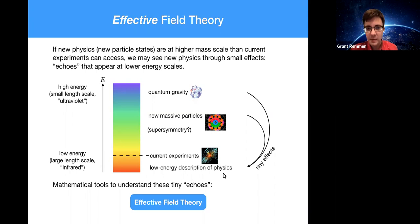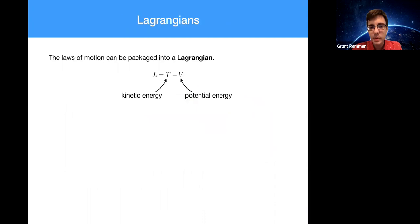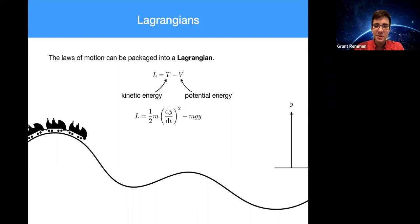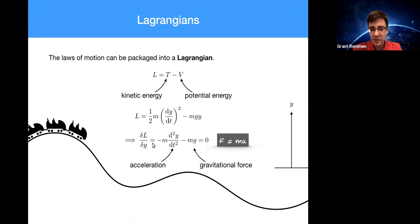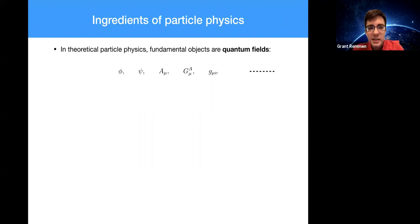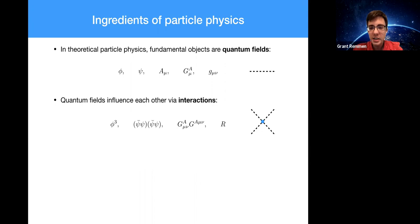In physics, the laws of motion can be packaged into something called the Lagrangian — essentially kinetic minus potential energy. The example from physics classes would be a roller coaster: kinetic energy minus gravitational potential energy. Varying the Lagrangian and demanding the variation vanishes gives Newton's law, F equals ma. In theoretical particle physics, the fundamental degrees of freedom aren't the height of a roller coaster, but quantum fields — things like scalars, fermions, gauge fields, even the metric of space-time — and they influence each other via cubic, quartic, and higher-point interactions.